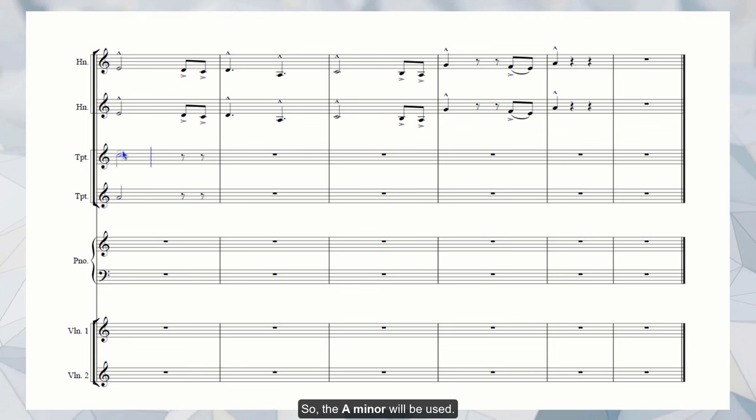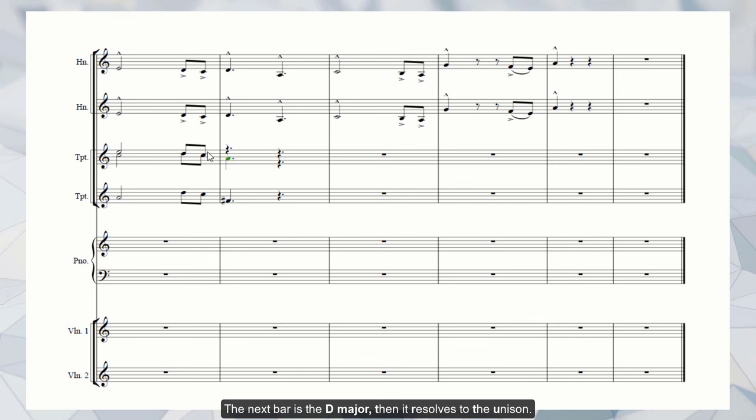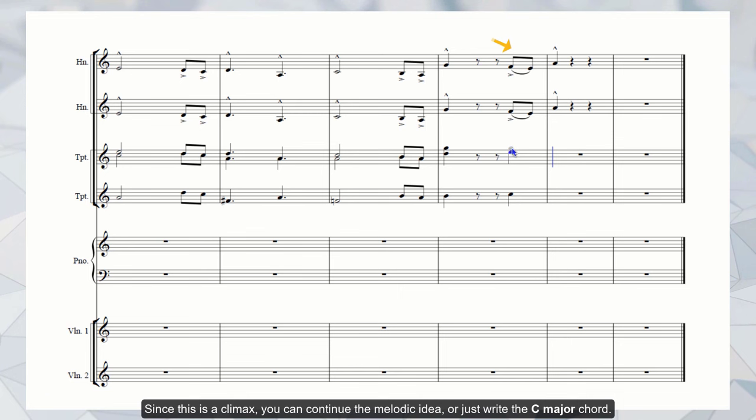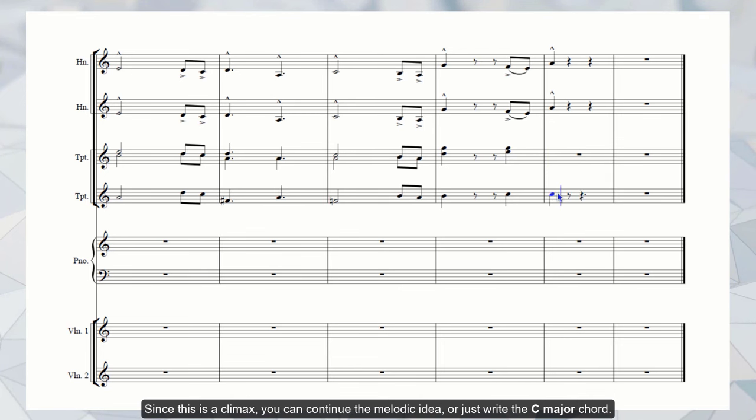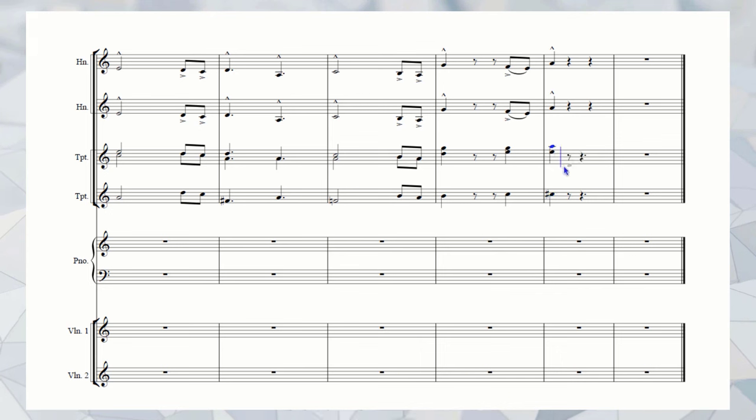So the A minor will be used. Two trumpets are above the horns and take the chord tones, while the top trumpet doubles the melody. That's all. The next bar is the D major. Then it resolves to the unison, the F major and again the unison. The fourth bar starts with the G major and goes to the C major. Since this is the climax, you can continue the melodic idea or just write the C major chord. The final chord is the A major. This is the basic form of writing.